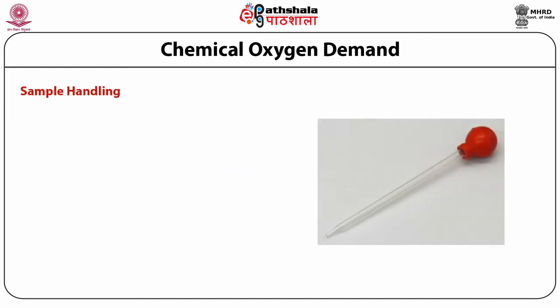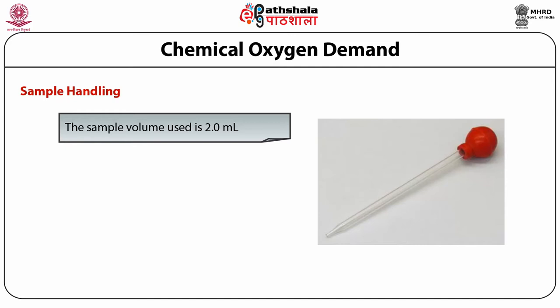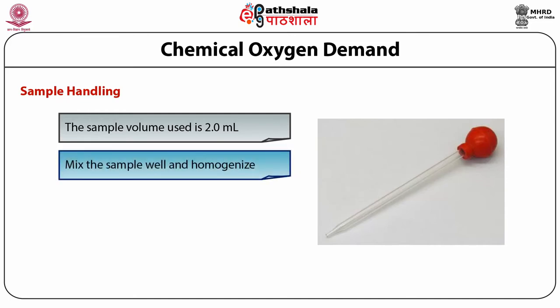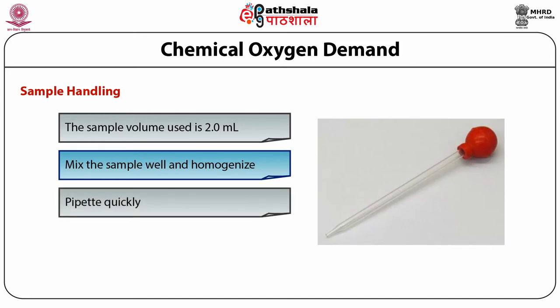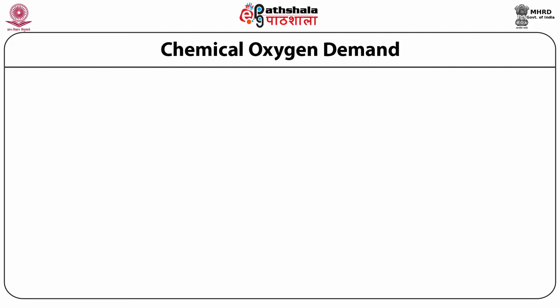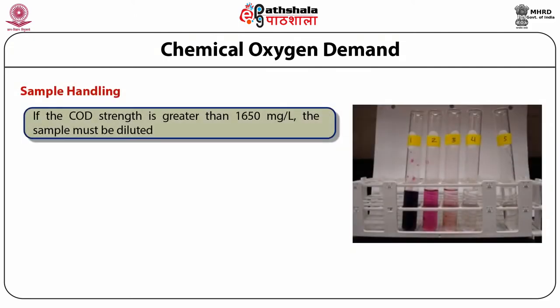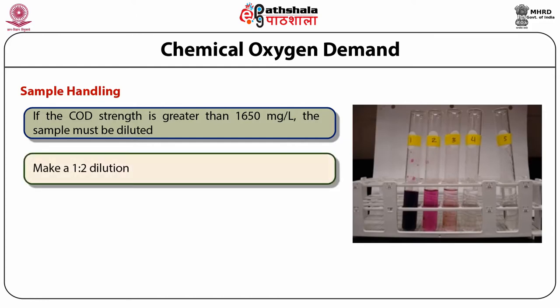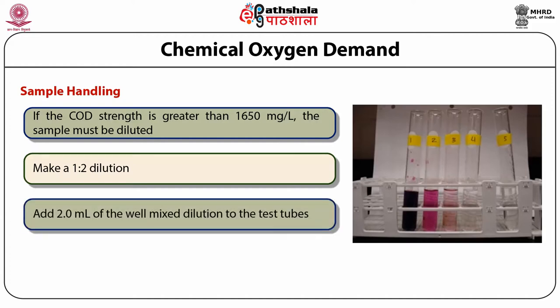For sample handling, the sample volume used for the COD test is 2 ml, so measuring the sample volume is critical. Be sure to mix the sample well and homogenize if necessary. Pipette quickly to avoid settling errors. If COD strength is greater than 1650 mg/L, the sample must be diluted — make a 1 to 2 dilution by measuring 50 ml of sample and adding to 50 ml of deionized water, then add 2 ml of the well-mixed dilution to the test tube.